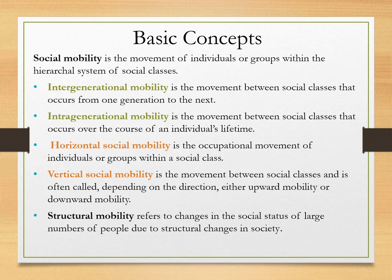Going from a grocery store to a fast food job with worse pay and benefits is downward vertical social mobility. Social mobility can also occur on a structural scale, in which entire portions of society are shifted from one class position to another. A good example would be a small town with a steel mill or auto plant that closes and everyone loses their job — that is downward vertical structural mobility, though it can certainly go upward as well.